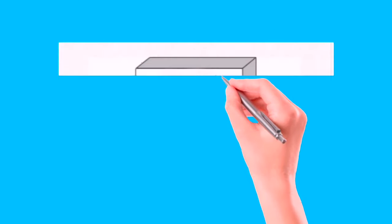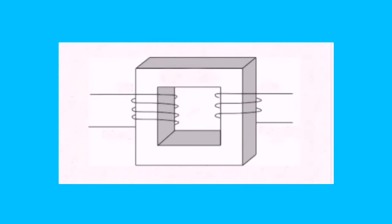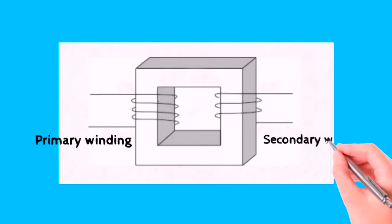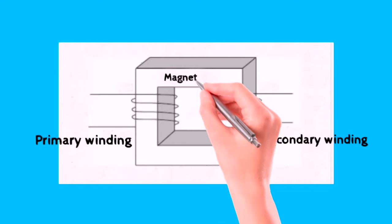A single phase voltage transformer basically consists of two electrical coils of wire. One called the primary winding and another called the secondary winding. These two coils are not in electrical contact, but instead wrapped together around a closed magnetic iron circuit which is also called the core.